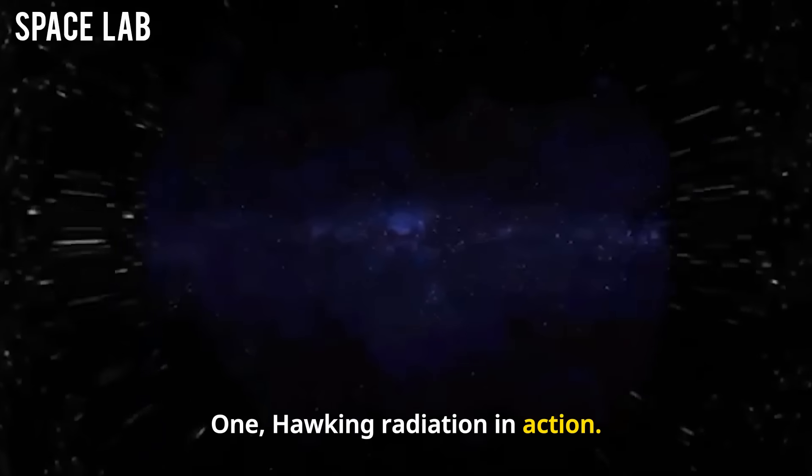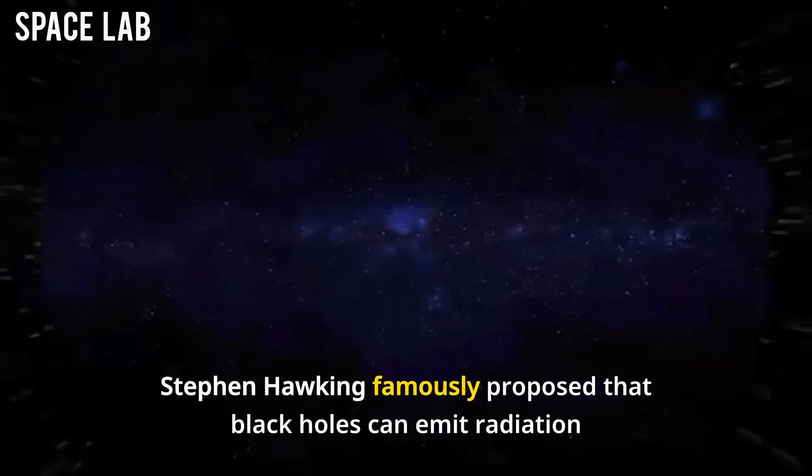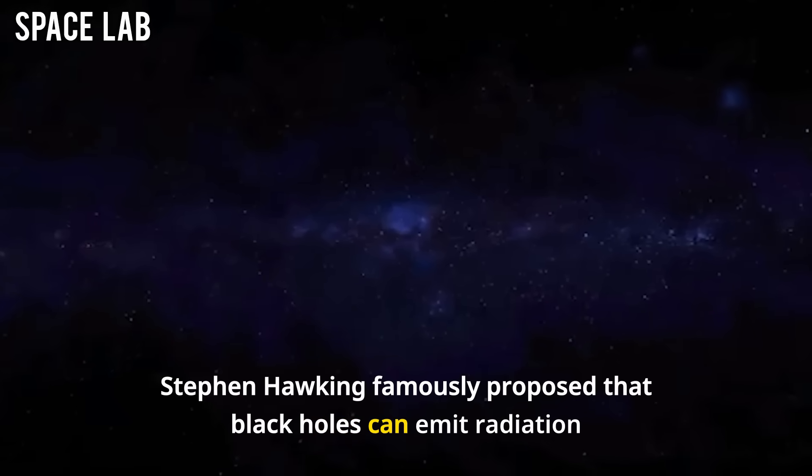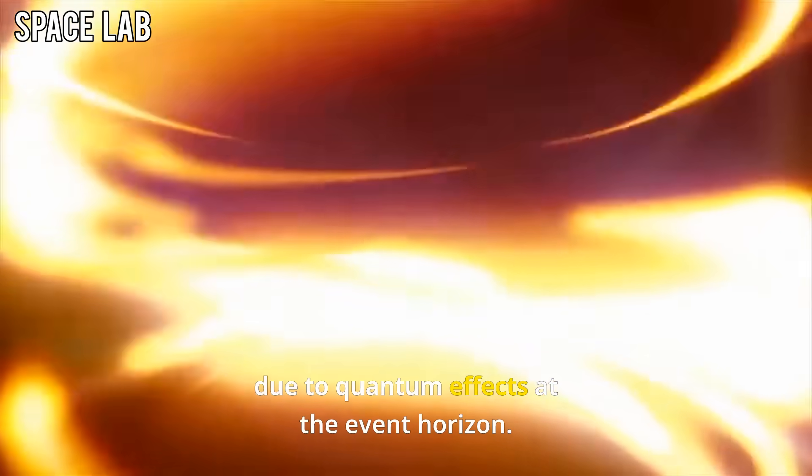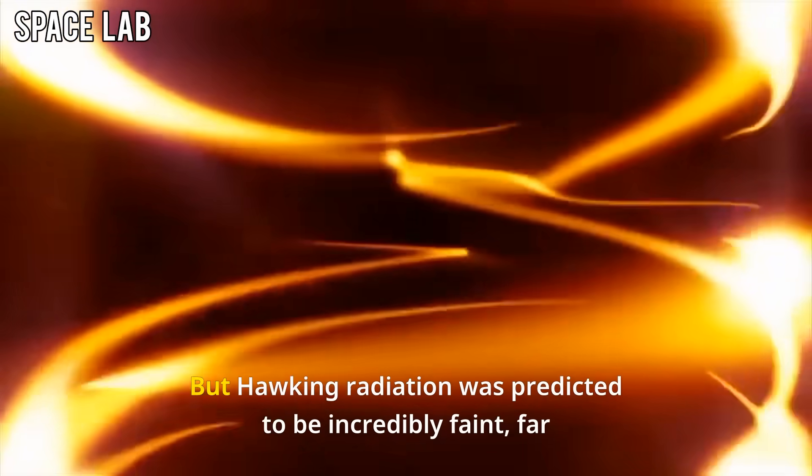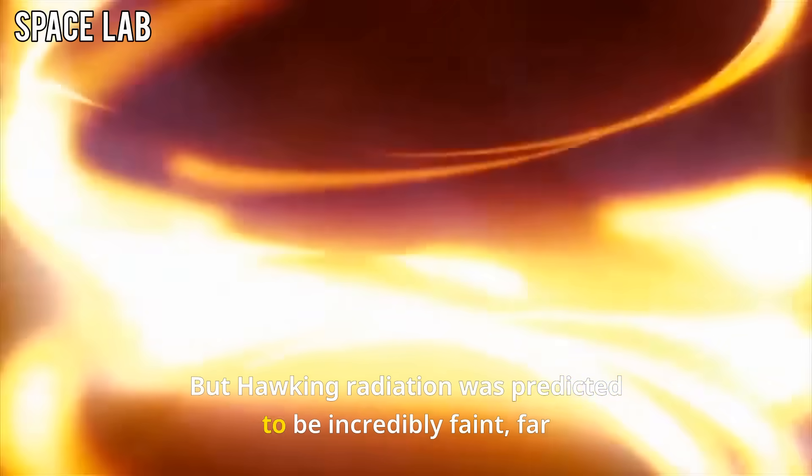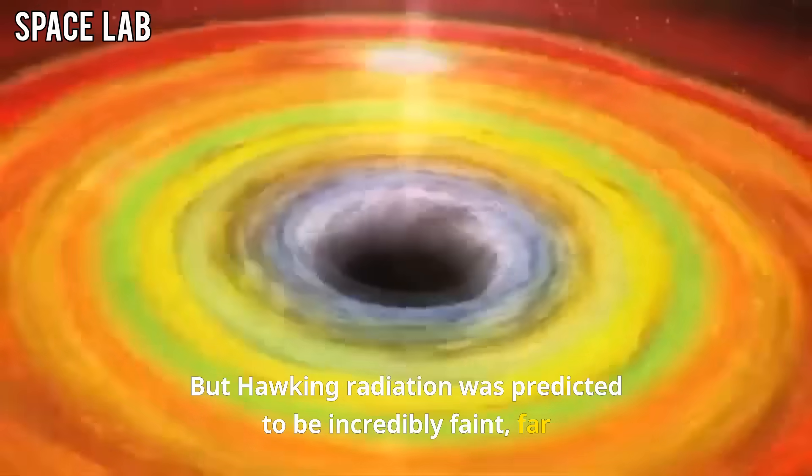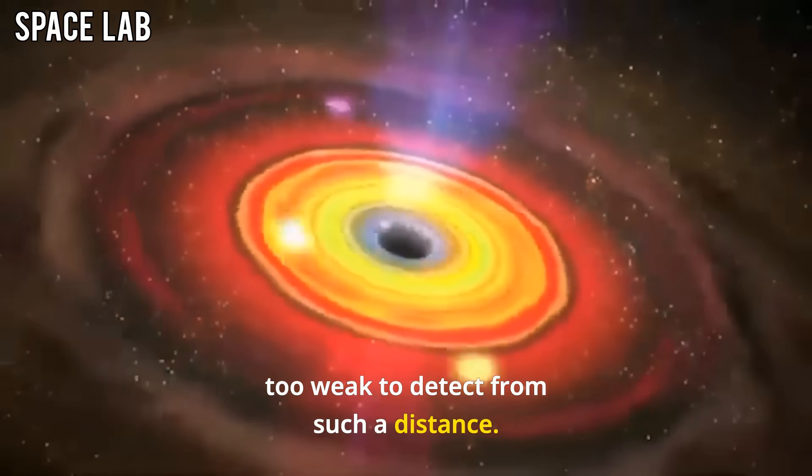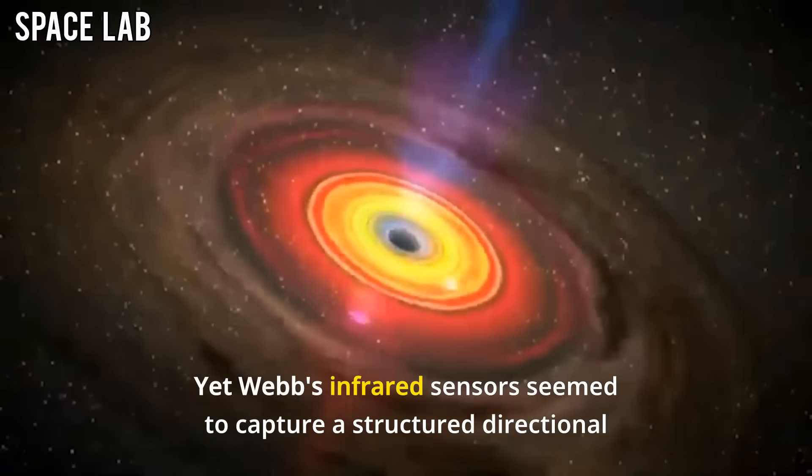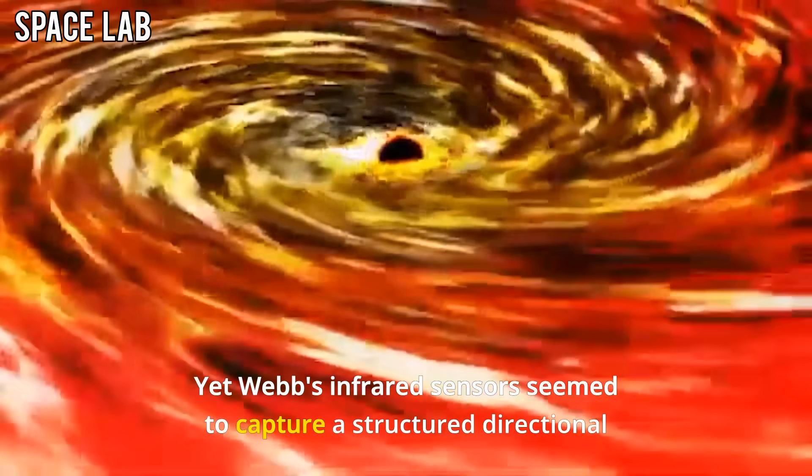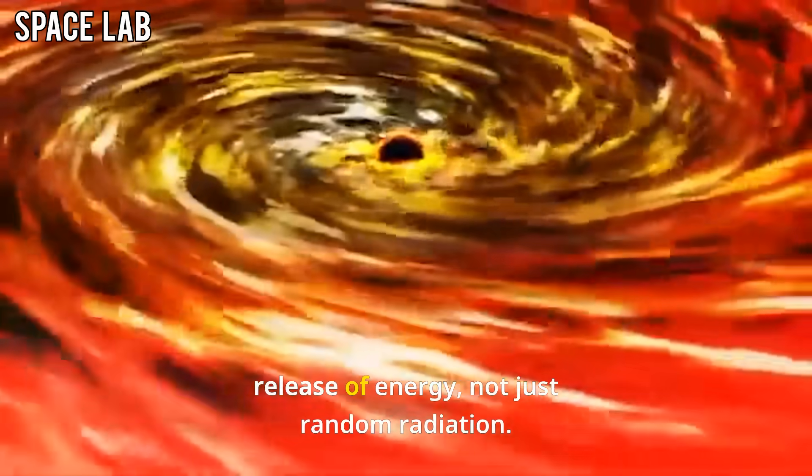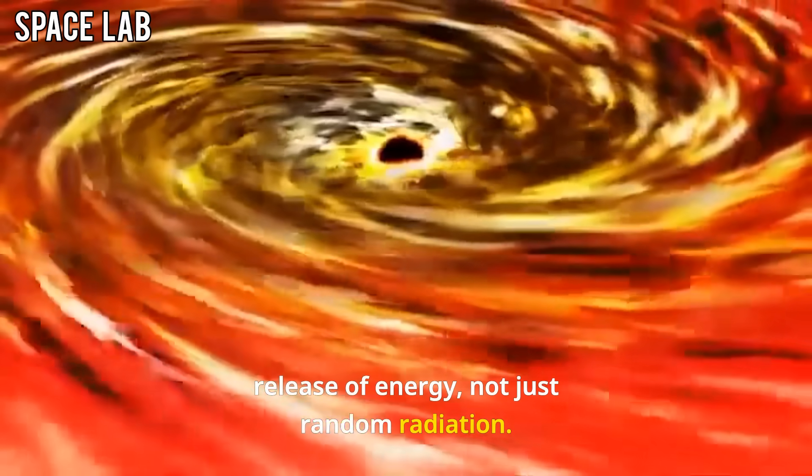First theory: Hawking Radiation in Action. Stephen Hawking famously proposed that black holes can emit radiation due to quantum effects at the event horizon. But Hawking radiation was predicted to be incredibly faint, far too weak to detect from such a distance. Yet Webb's infrared sensors seemed to capture a structured, directional release of energy, not just random radiation.